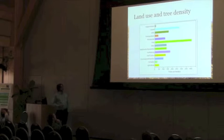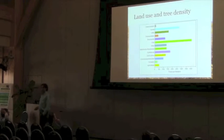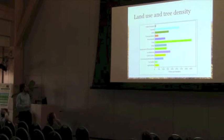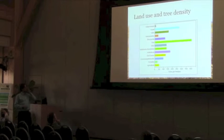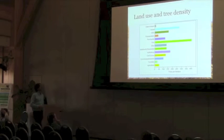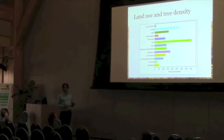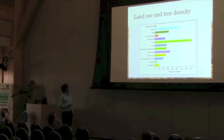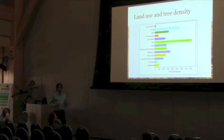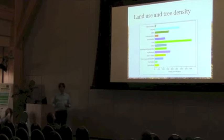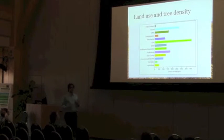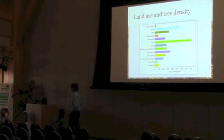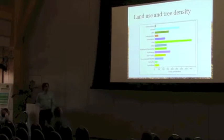Looking at land use and tree density gives us an idea of where we can target efforts. Parklands obviously have a lot of trees and are a great place to protect them. Probable room for growth is in multi-family residential and residential areas, since the land area is so great there. We can only do so much in utility and transportation corridors — we can only plant so many trees in those places. This gives you a sense of where our trees are growing.